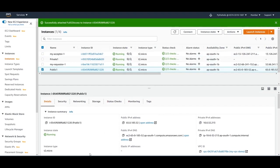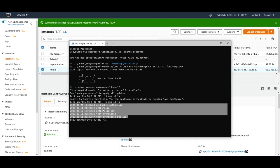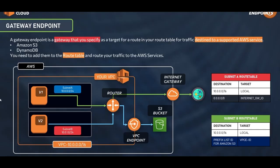Now going back to the terminal and running `aws s3 ls`, we can see the list of buckets. This works because it's a public instance — I'm able to access it through the internet gateway and therefore access the S3 buckets. Next, I want to have the private instance also connect to S3 buckets using the VPC endpoint.